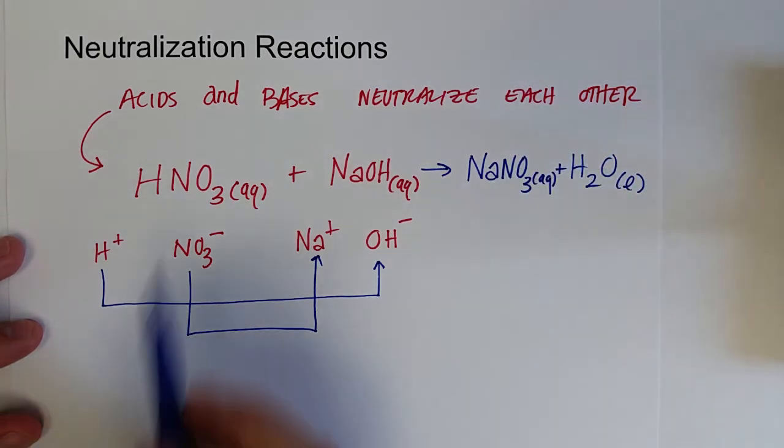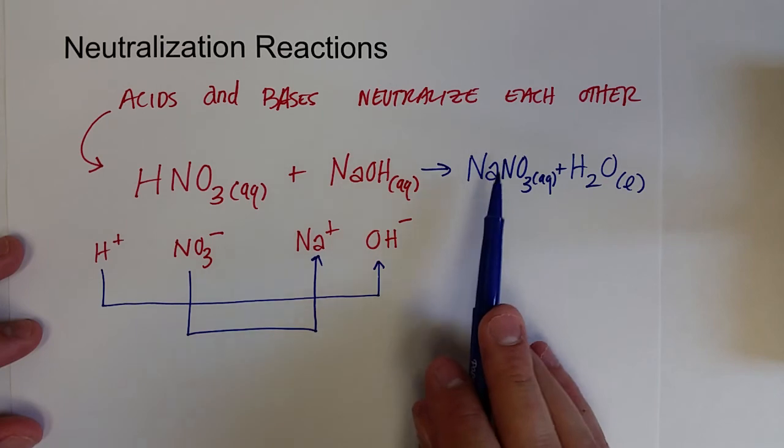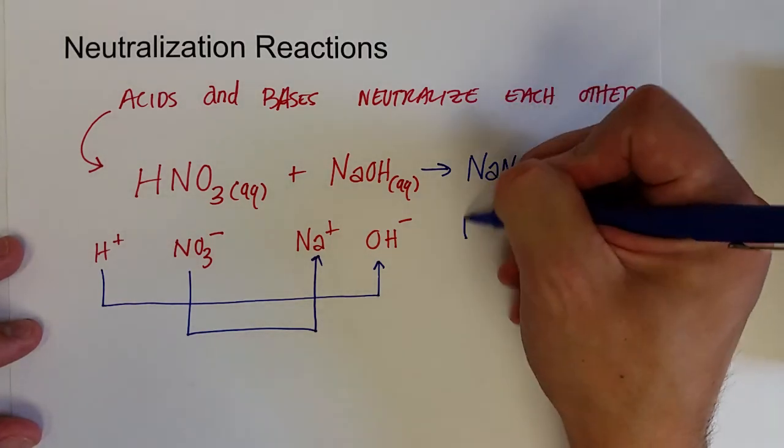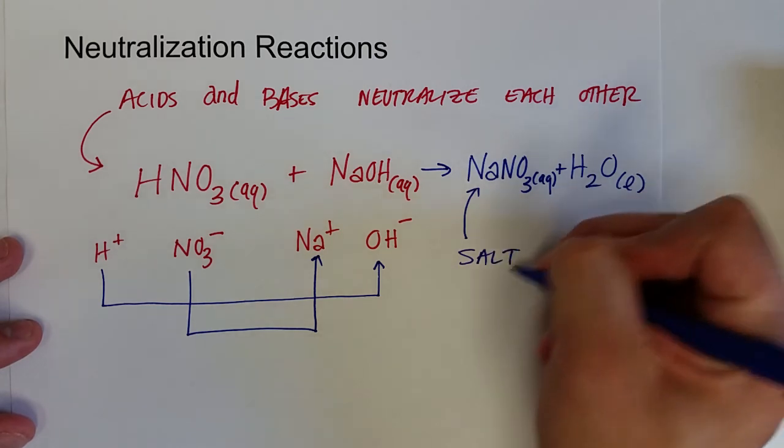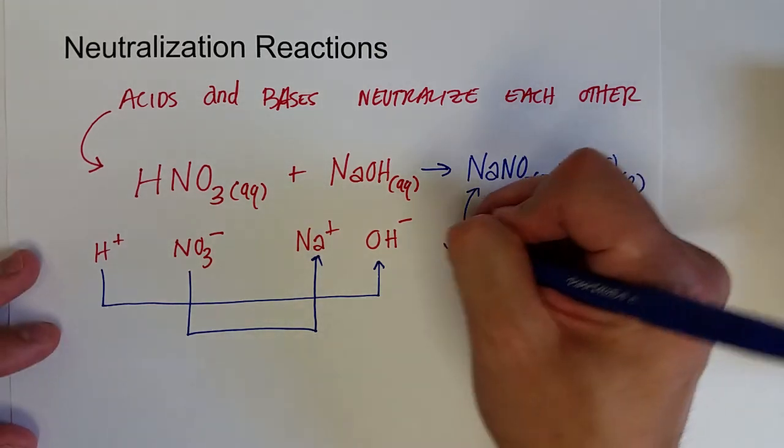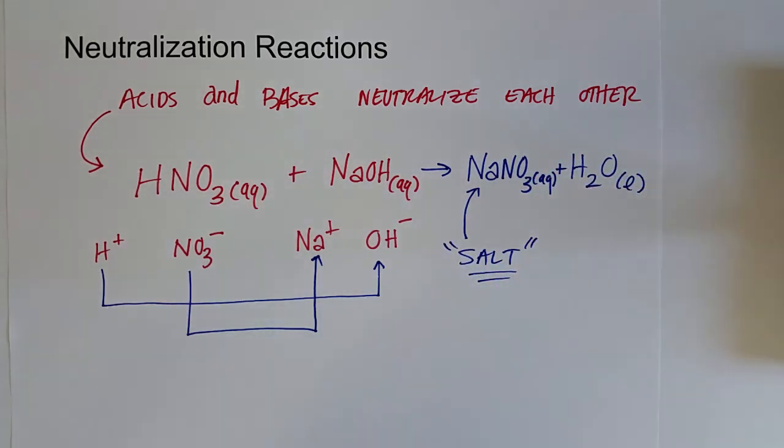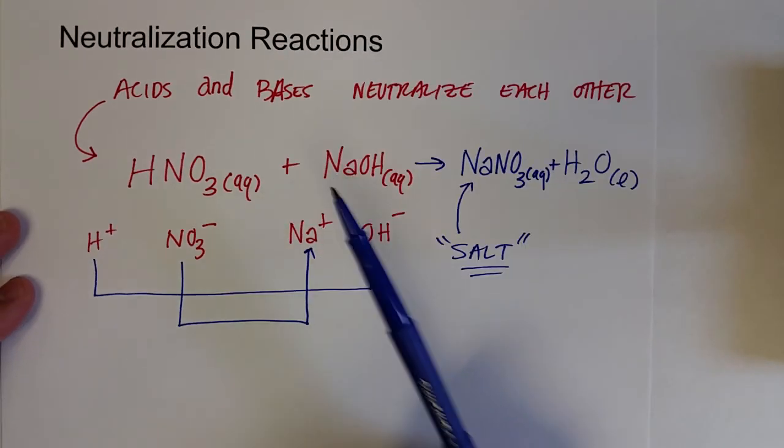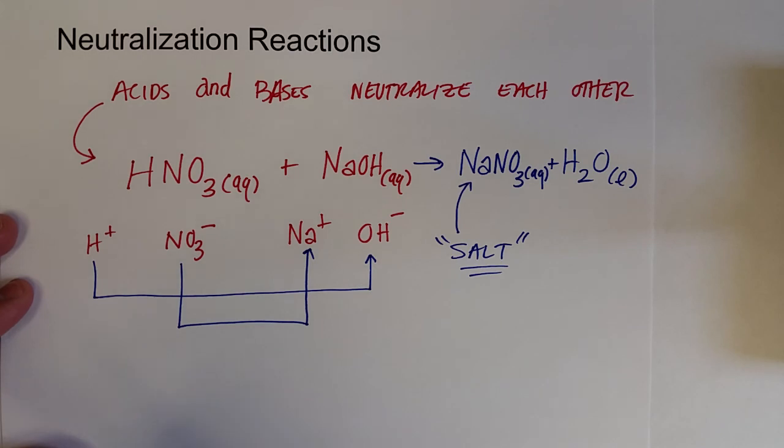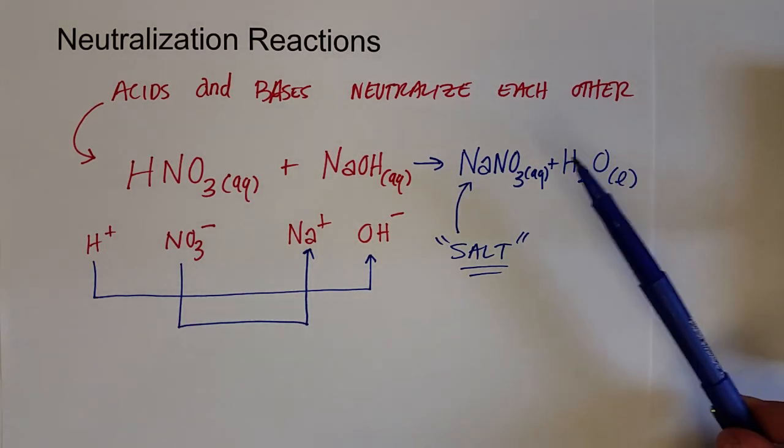And so when I said an acid plus a base equals a salt plus water, any salt is just a generic name for an ionic compound. Just like table salt is sodium chloride. So acids and bases always neutralize each other for strong acids and strong bases. Water is always produced in that reaction. And also a salt.